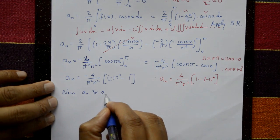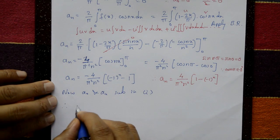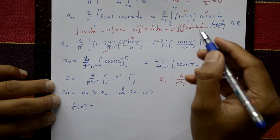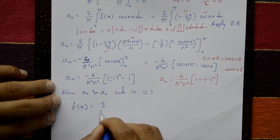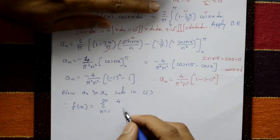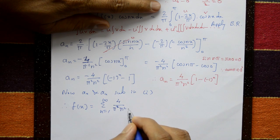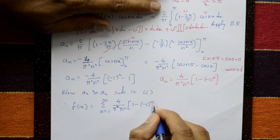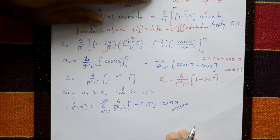Substituting a₀ and aₙ into equation 1: since a₀ = 0, f(x) = summation n=1 to infinity of aₙ cos(nx), where aₙ = (4/π²n²)·[1 − (−1)ⁿ]. This is the required Fourier series.